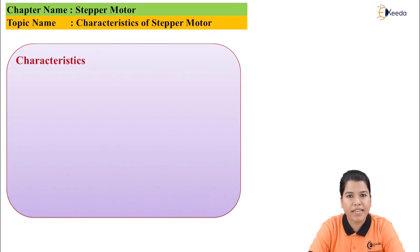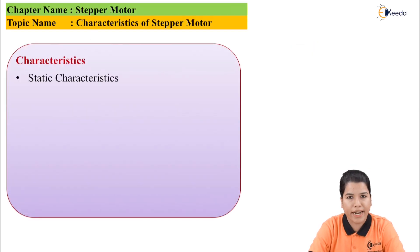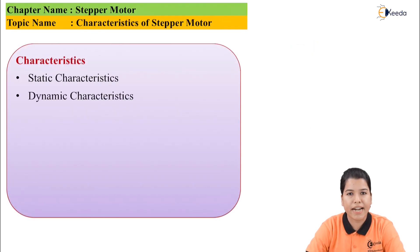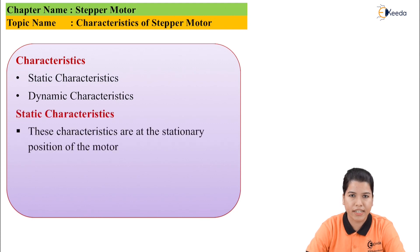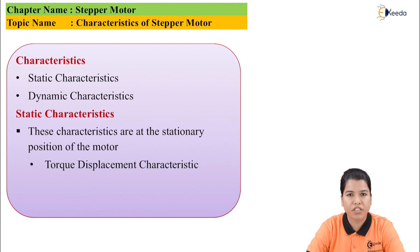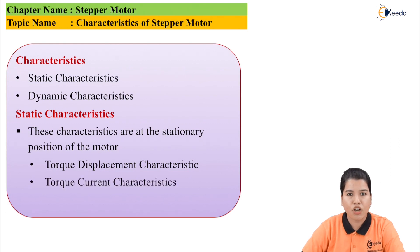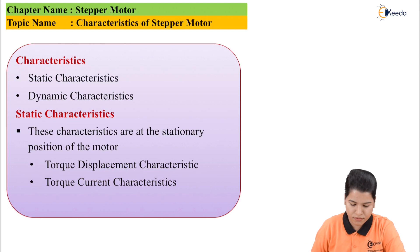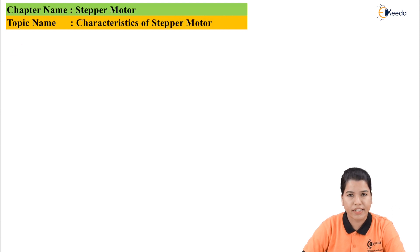In case of stepper motor there are basically two characteristics. First is static characteristic and second is dynamic characteristic. Static characteristic is the characteristic shown by the motor when it is in a stationary position. It basically consists of torque-displacement characteristic and torque-current characteristic.